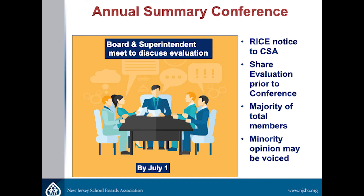The summation part of the process is the board and the superintendent sitting down together for that summary conference. The board would have to provide the superintendent with the RICE notification. It's important to give the superintendent the evaluation at least 48 hours ahead of time so that she can come to the meeting prepared to have a meaningful discussion with the board. I would like to emphasize that it really is important for all board members who are not conflicted to be there.